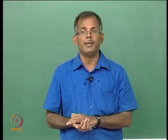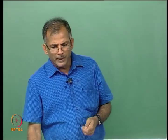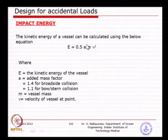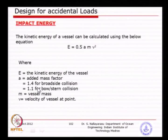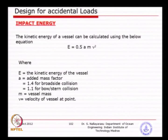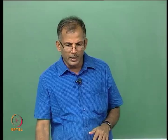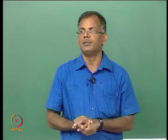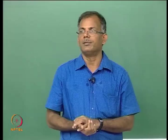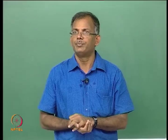The impact energy is calculated using the kinetic energy formula: E = 0.5 × M × V², with an added mass coefficient for a floating structure moving in water. Here, V is the velocity of the arriving ship or boat, M is the mass of the ship, A is the added mass factor, and E is the kinetic energy at impact. The mass of the ship is obtained from the weight divided by gravitational acceleration, typically expressed as dead weight tonnage (DWT) plus payload.